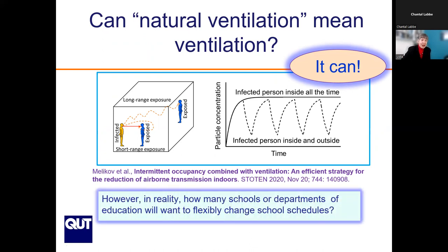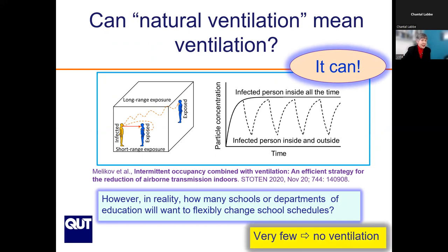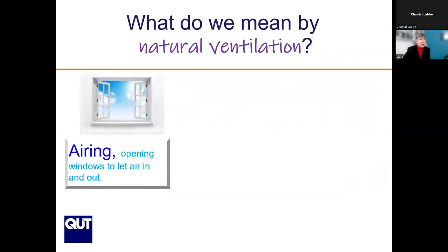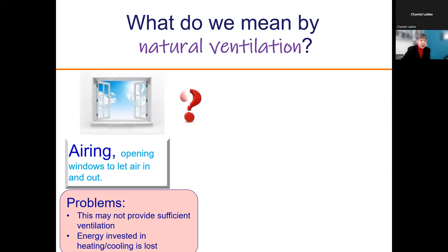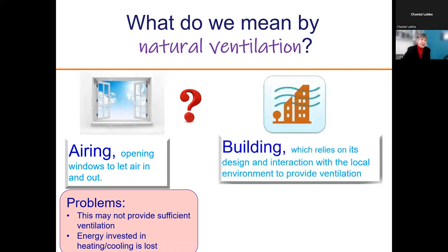However, in reality, how many schools or departments of education will want to flexibly change school schedules? In my experience, very few, which means there is no ventilation. What do we mean by natural ventilation? It is another term for opening windows to let air in and out. The problem is this may not provide sufficient ventilation, and the big problem is that energy invested in heating or cooling is lost. So when we talk about natural ventilation in the future, we should think about it differently.